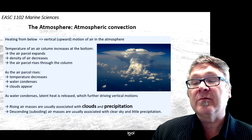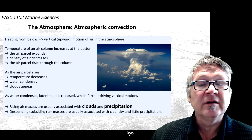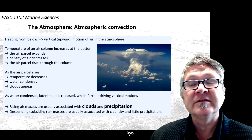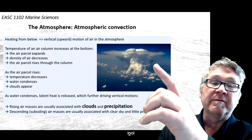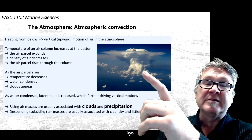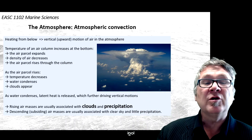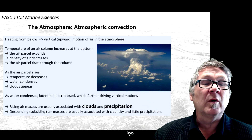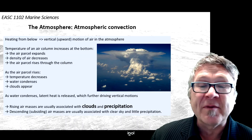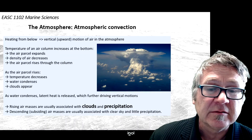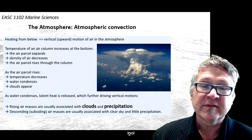As the air parcel rises, the temperature decreases, water condenses, and clouds appear. There is one picture here next to me showing you one tropical convection cell.